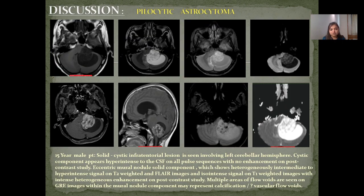Case 1 — Pilocytic Astrocytoma: 15-year-old male patient with a solid cystic infratentorial lesion involving the left cerebellar hemisphere. Cystic components appear hyperintense to CSF on all pulse sequences with no enhancement on post-contrast study. The eccentric mural nodule shows heterogeneous intermediate to hyperintense signal on T2-weighted and FLAIR images, iso-intense on T1-weighted images with heterogeneous enhancement on post-contrast. Multiple areas of flow void seen on GRE may represent calcification or vascular flow void.